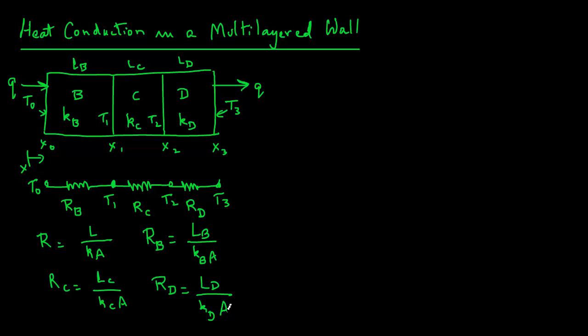And also recall from our previous module that the Q value through a wall is Q equals the temperature difference divided by the thermal resistance.